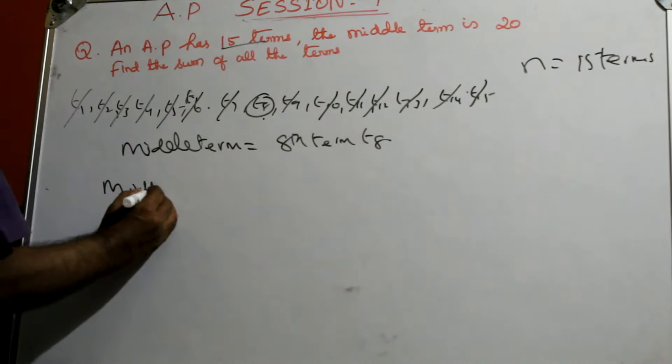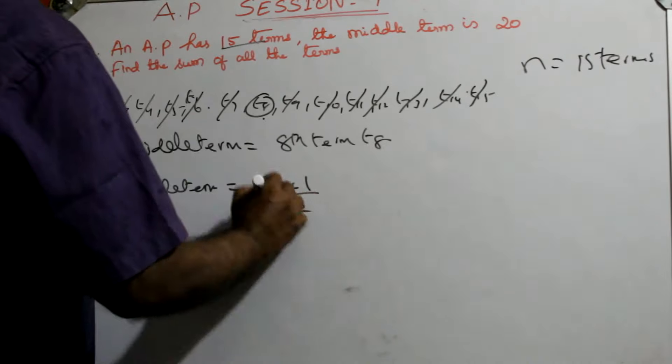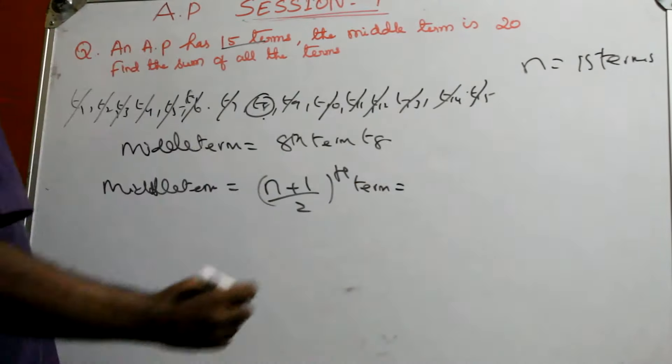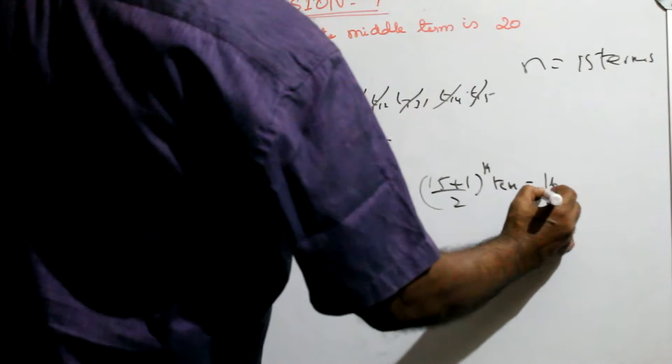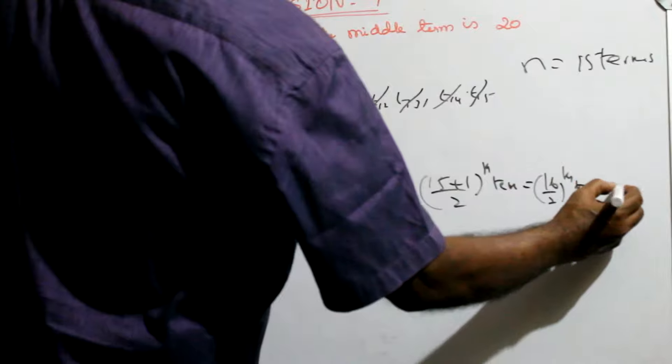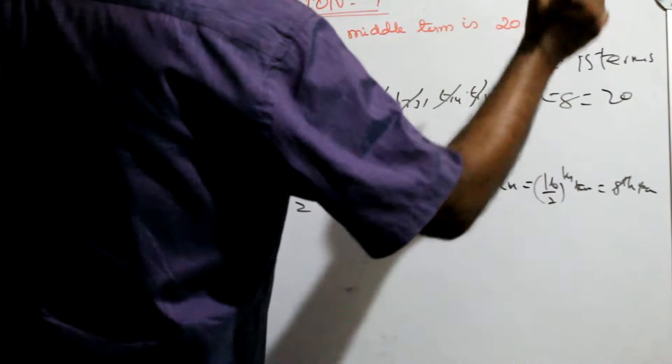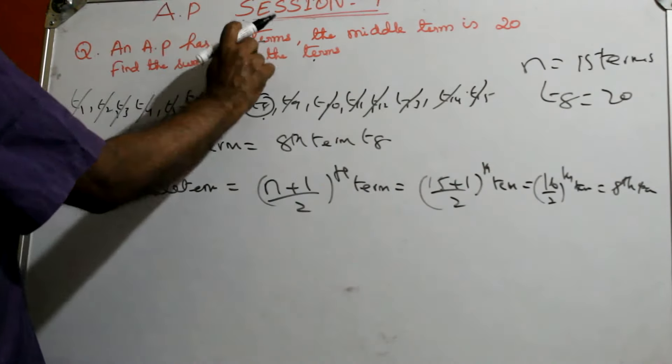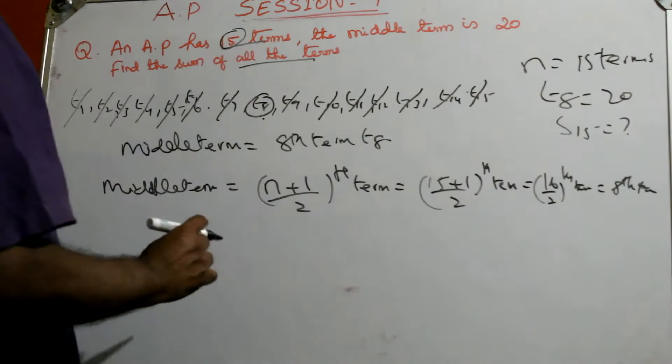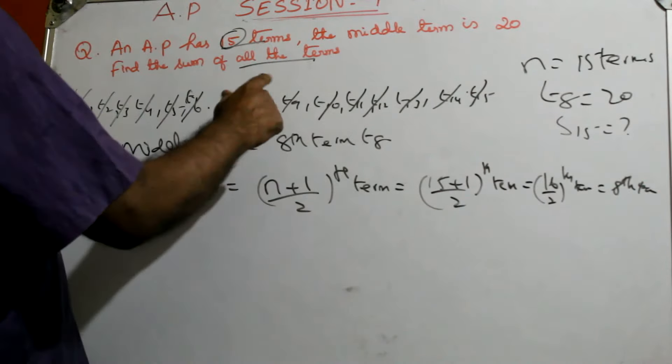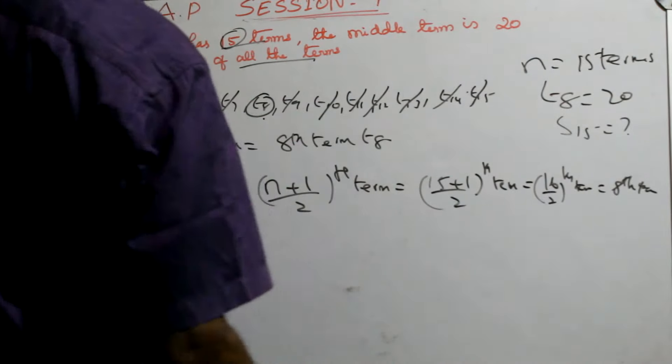Middle term is the eighth term. So middle term is nothing but eighth term, T8. You can cancel this, or you can use the formula: middle term is equal to n plus 1 by 2 term. So n is nothing but 15. So 15 plus 1 by 2 term which is equal to 16 by 2 term which is equal to eighth term.